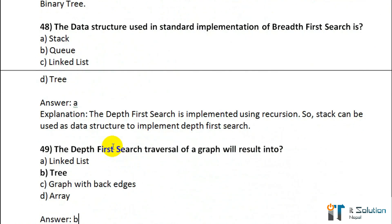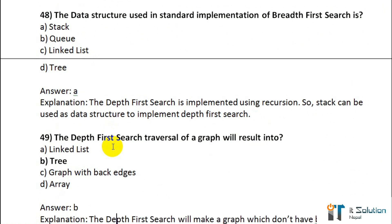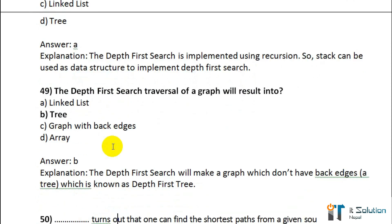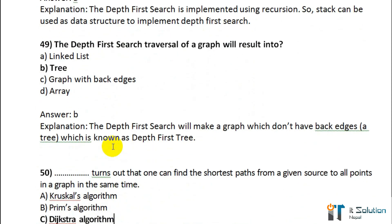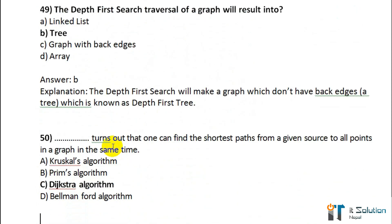Question number 49: The depth-first search traversal of a graph will result in — option B — tree. Its correct answer is tree. Question number 50: It turns out that one can find the shortest path from a given source to all points in a graph in the same time — its correct answer is Dijkstra's algorithm.